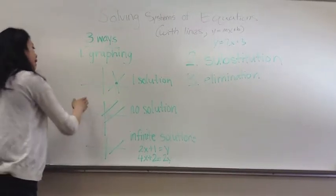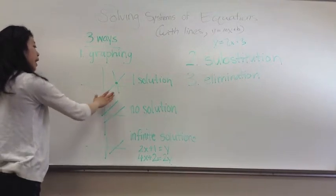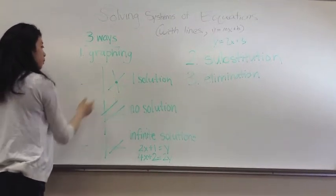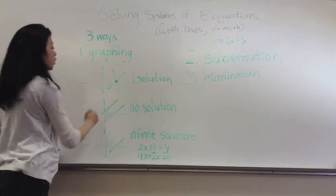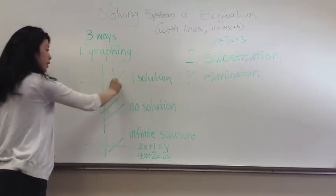So one way would be if the lines have different slopes, then there would only be one solution, because the two graphs would cross once. So this point is that one solution.